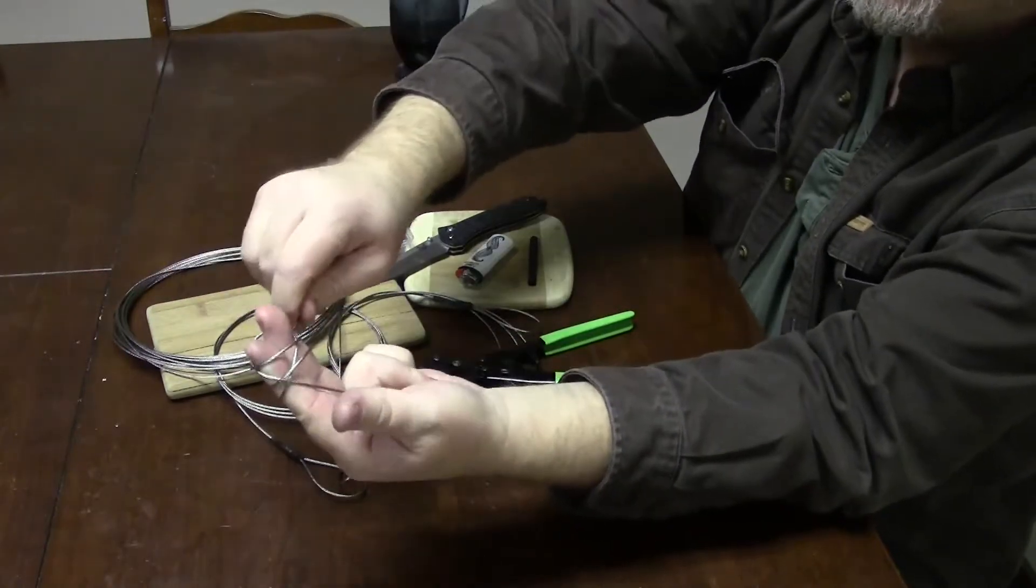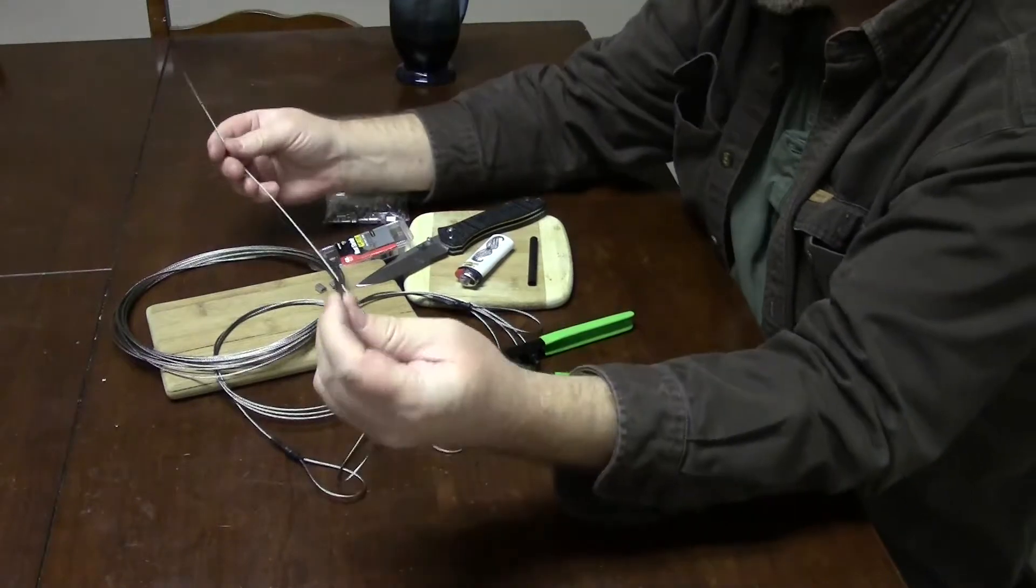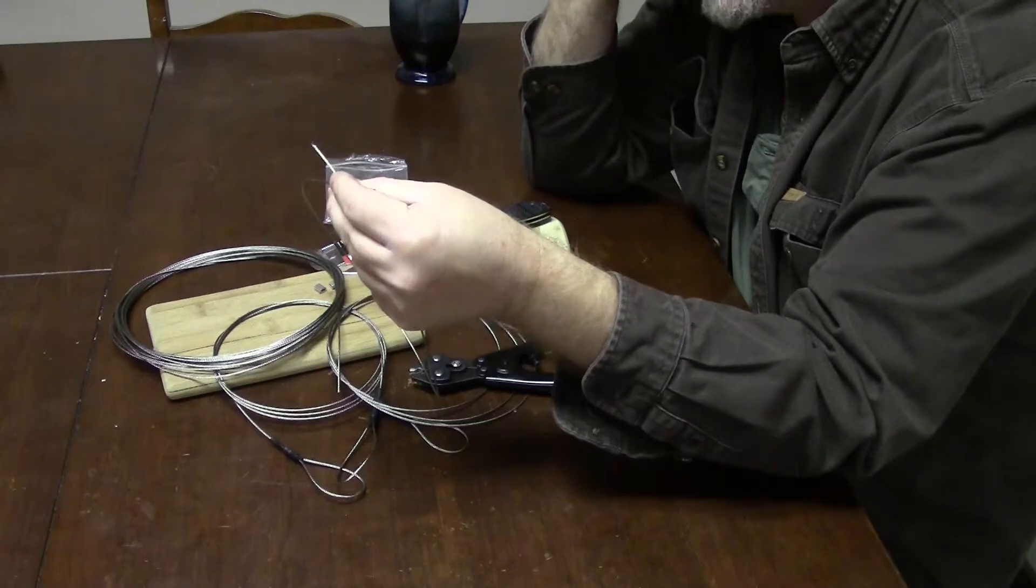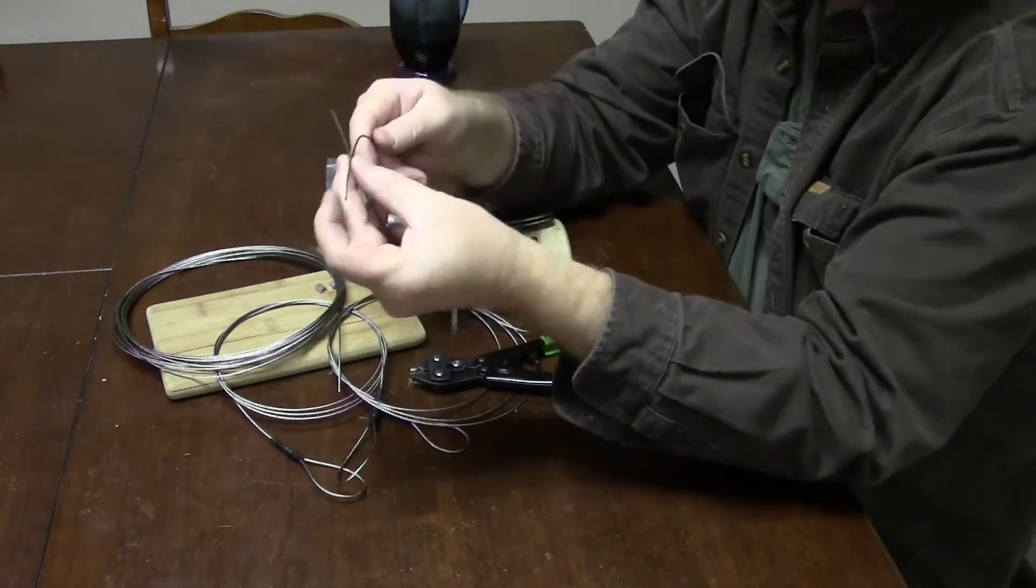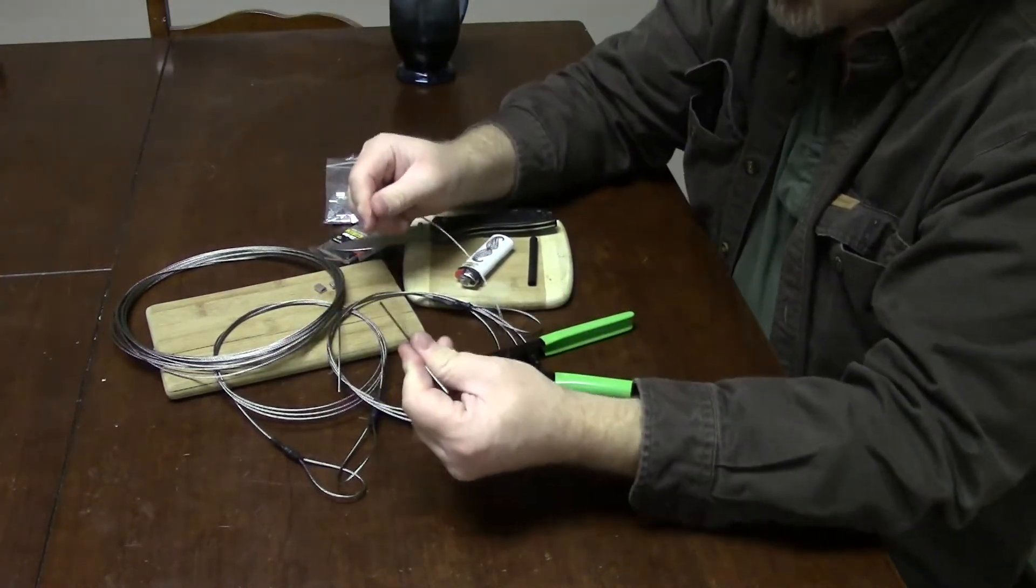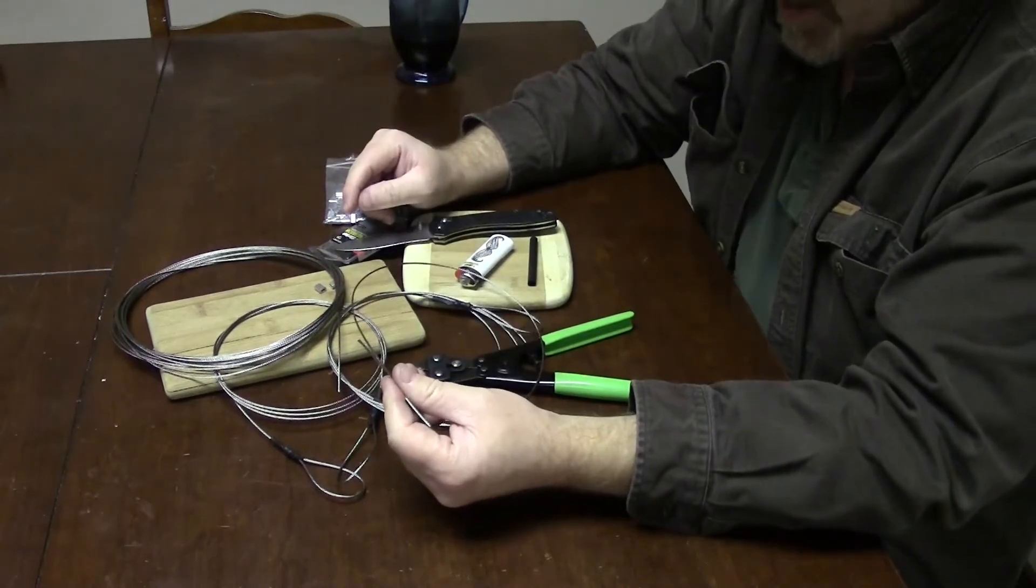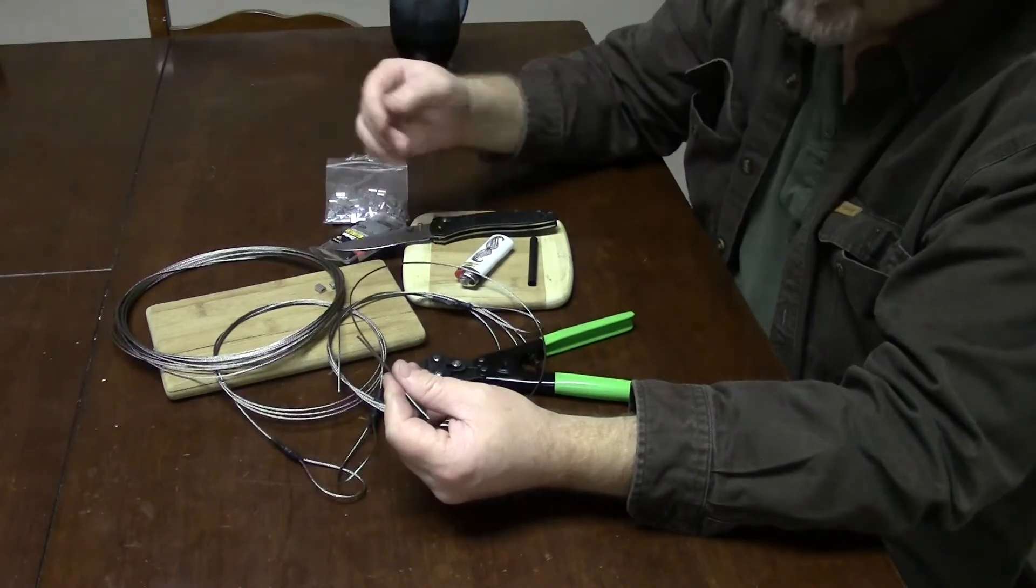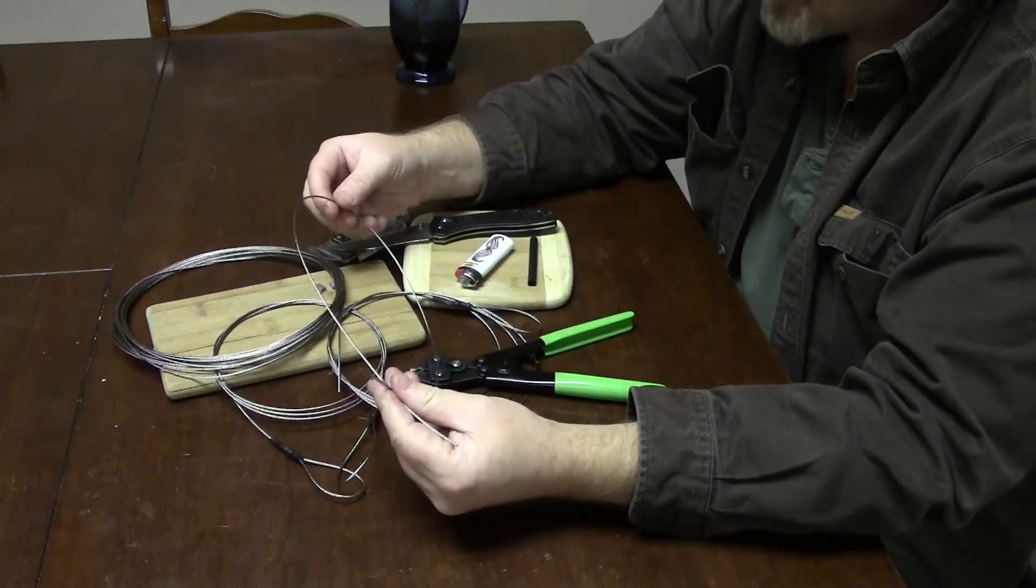It's not as soft as rope and you can kink it, so it's not 100% flexible like a nylon string, but it's pretty darn flexible. This is 7 by 7, it's 7 strands of wire twisted together and then 7 of those twisted together, so it's built a lot like 550 cord is.